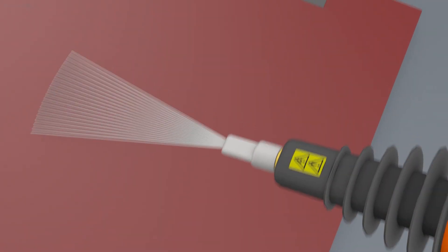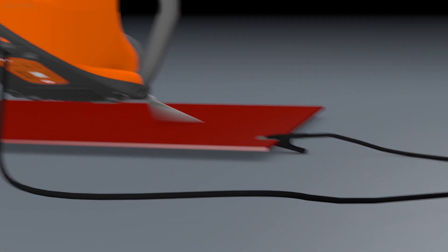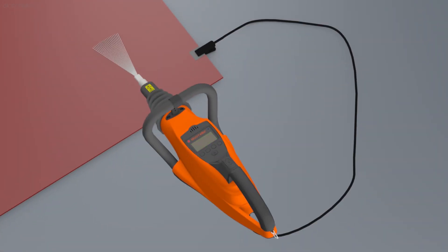When this breakdown occurs, the current flows from the probe through the substrate and back into the holiday detector via an earth or signal return cable, completing a circuit and thereby triggering an alarm to signal a flaw has been detected.